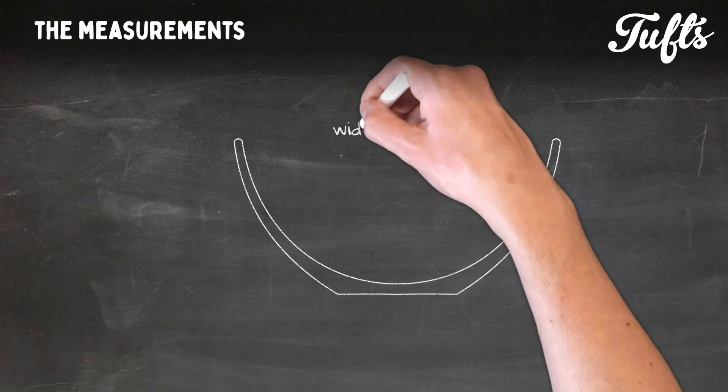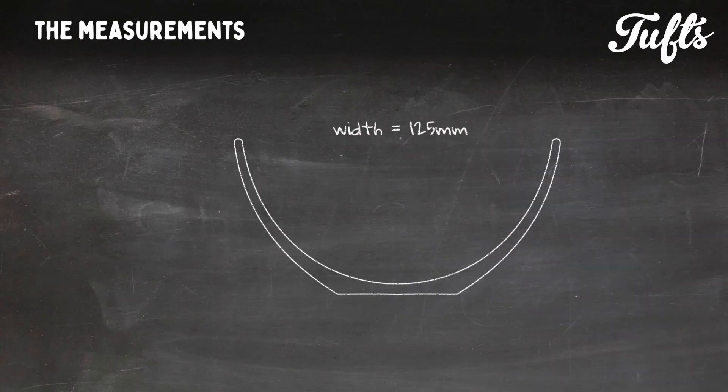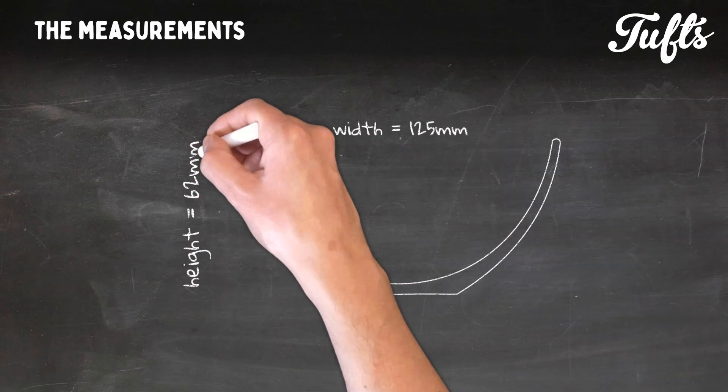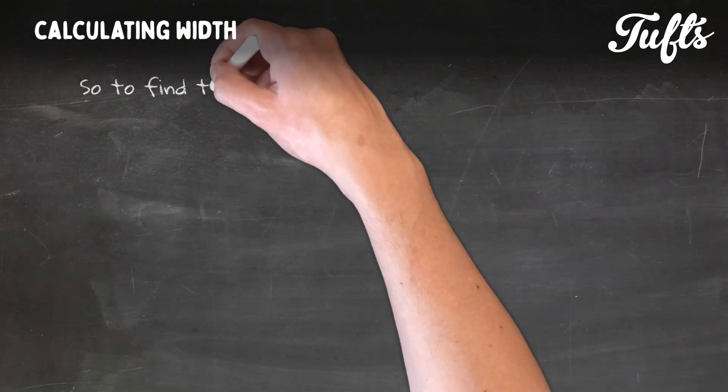So the fired width is 125mm and the height is 62mm. So to calculate the throwing width...